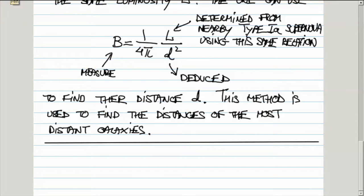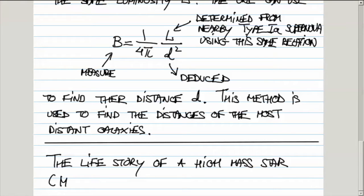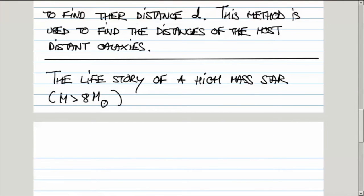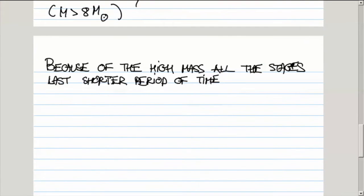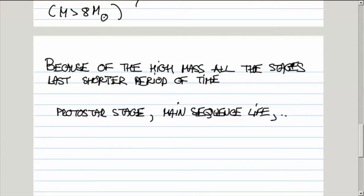Next, I want to discuss the life story of a high mass star, where the masses exceed about eight solar masses. That's what we consider to be a high mass star. Because of the high mass, all the stages last a shorter period of time. The first stage is the protostar stage, then we have main sequence life, and then essentially the end game that we'll discuss shortly.